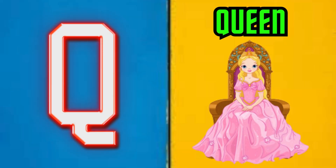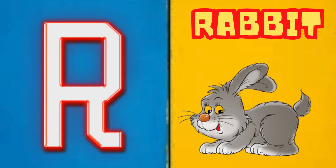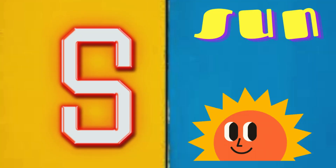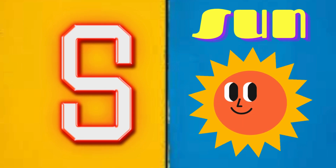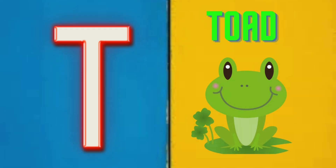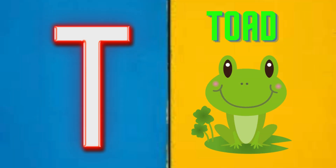Q is for Queen, Q-Q-Queen. R is for Rabbit, R-R-R-Rabbit. S is for Sun, S-S-Sun. T is for Toad, T-T-Toad.